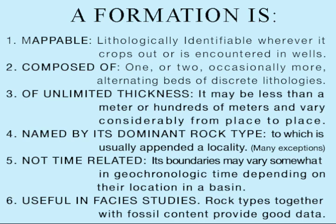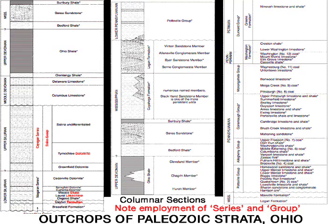A formation's thickness may be less than a meter or range up to several thousand meters. It must be mappable, and if its aerial extent is considerable, its boundaries in different localities may vary slightly in relation to time. A formation is commonly named according to its dominant lithology, often supplemented by a geographic location — Maro Shale, Potsdam Sandstone, Shakopee Dolomite, Morrison Formation. This information is common on geologic maps and sometimes is found on columnar well sections.